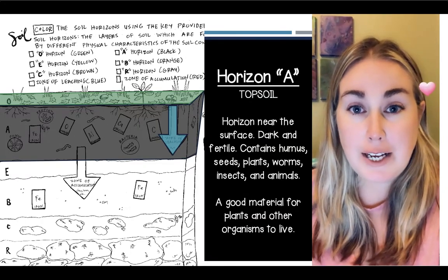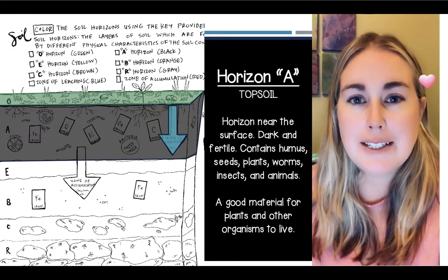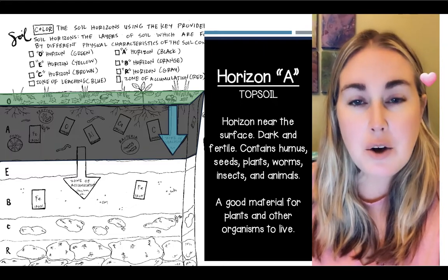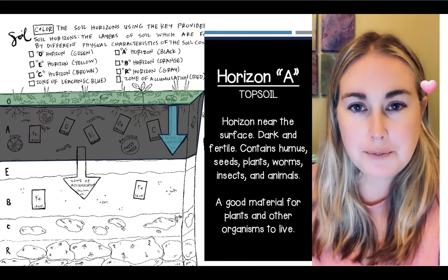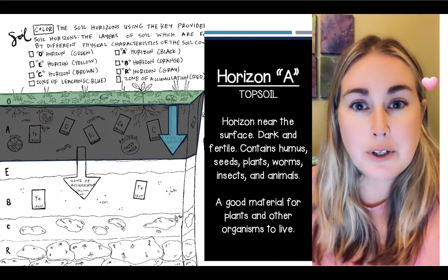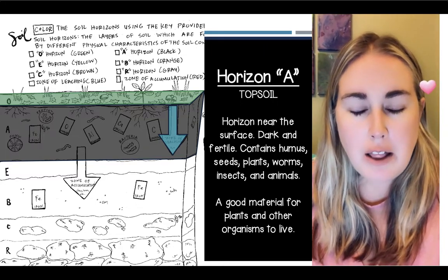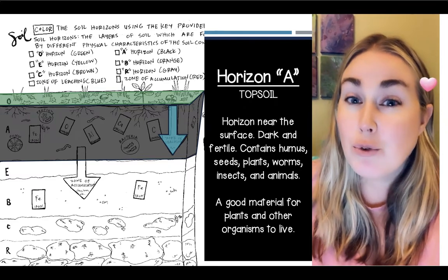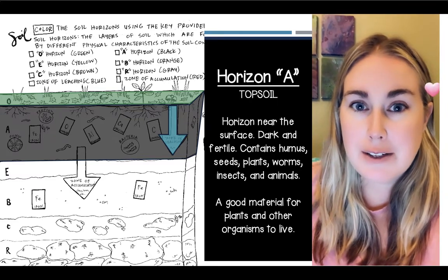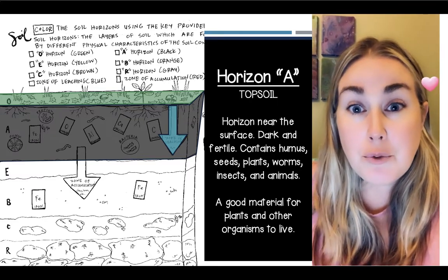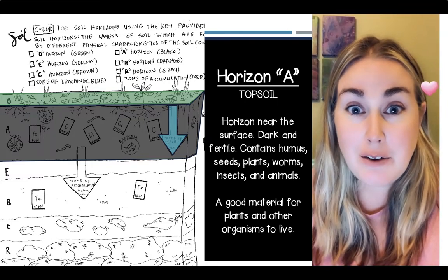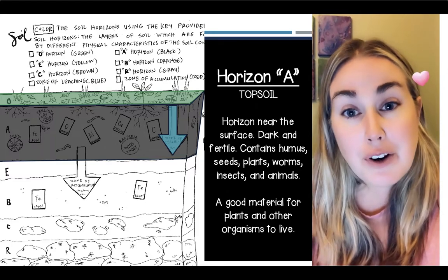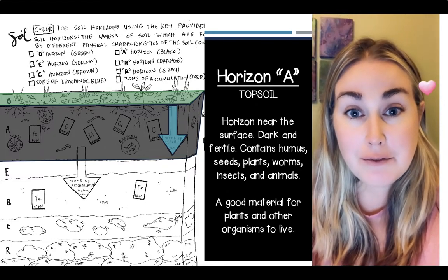The next horizon is Horizon A. We would call this topsoil. Topsoil is dark in color and rich in nutrients. It's a great place for plants to grow and for animals to live.